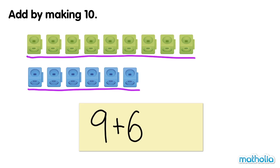Let's add the cubes by making ten. Let's move one cube from the bottom to the top. Now we have ten cubes on the top and five cubes on the bottom. Ten and five make fifteen.